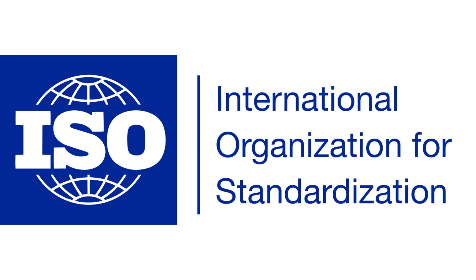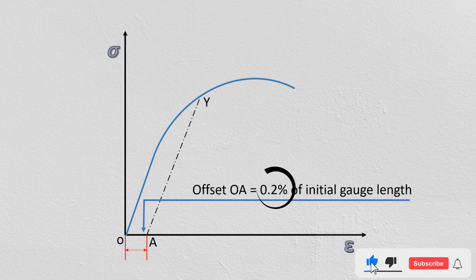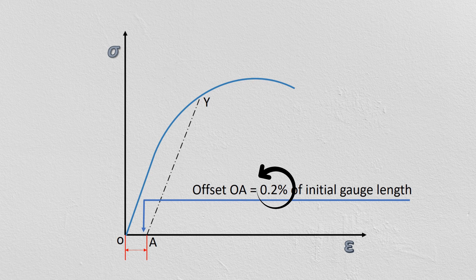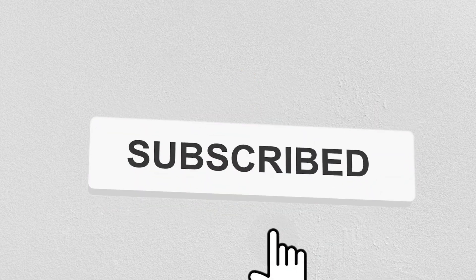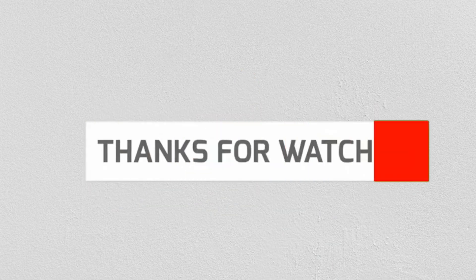So the most common offset is 0.2%, but this can vary depending on the material. Hope you like this video, please share this video and subscribe to my channel for more technical updates. Thank you.